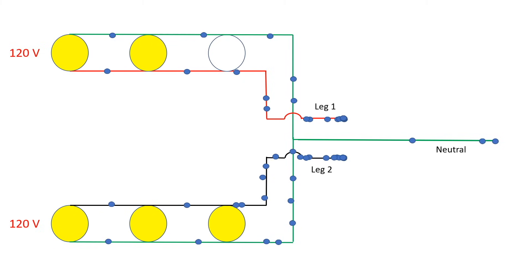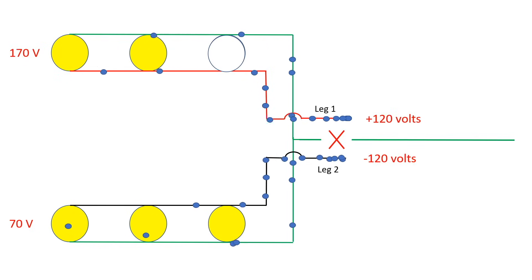Leg one and leg two are essentially separate from each other. Now, let's break that neutral and watch what happens. Now you can see how the current begins flowing from leg one to leg two and then back to the transformer.